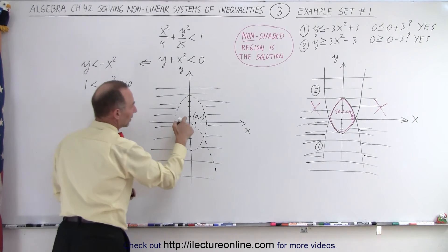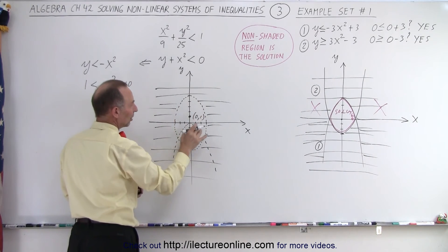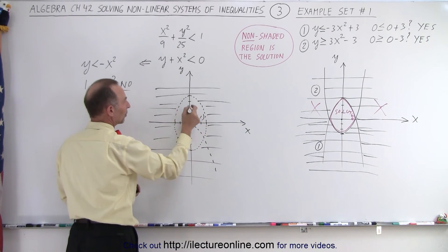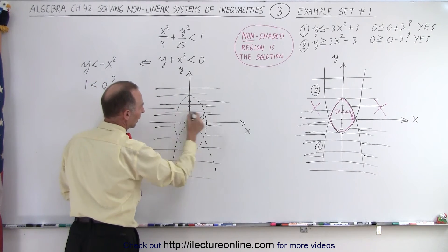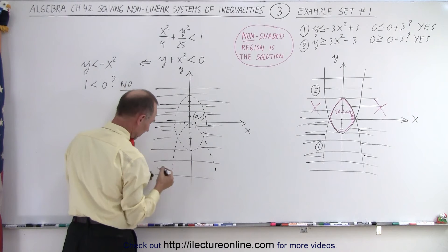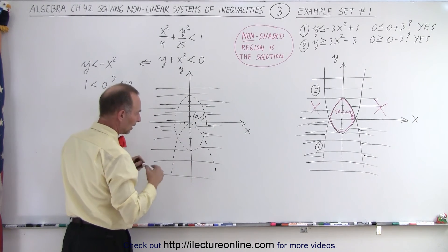And of course the answer is no, which means I picked the test point that's not in the region. This is part of the region; this is not part of the region. So we can get rid of everything that's outside the parabola, which means the only thing that's left is this region right here.